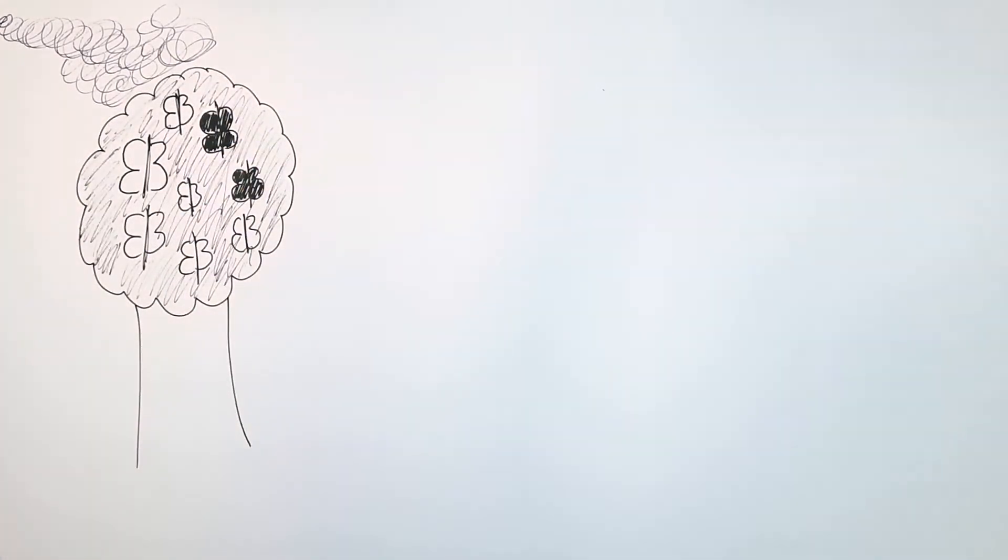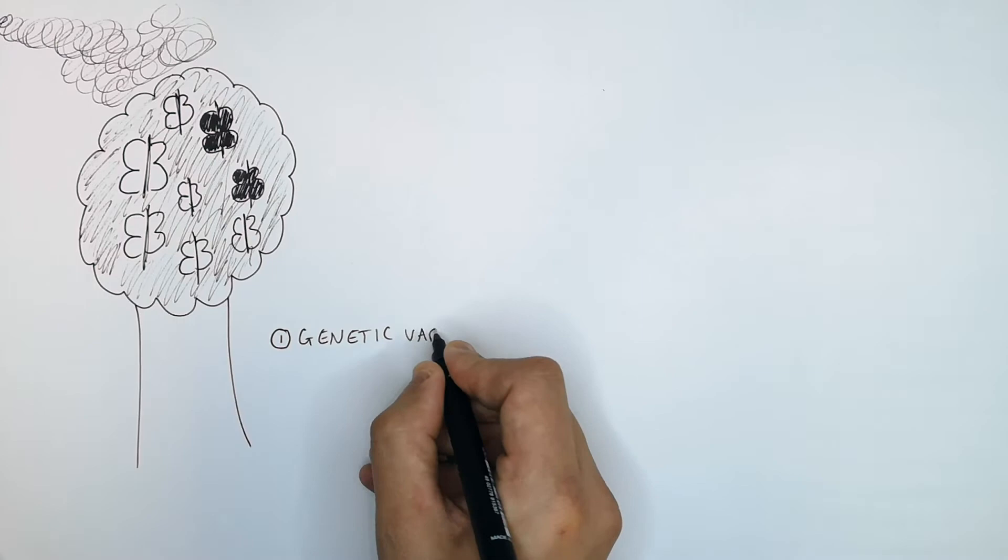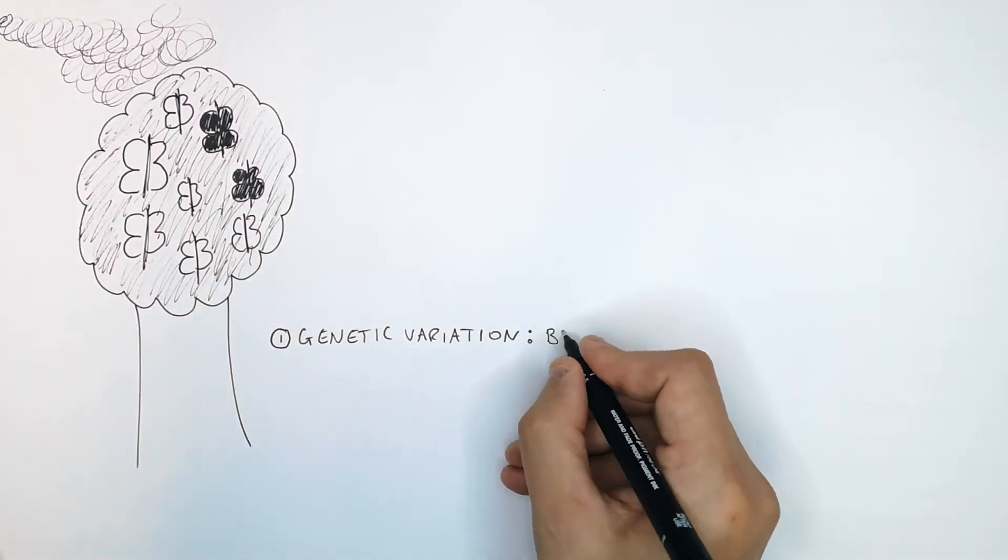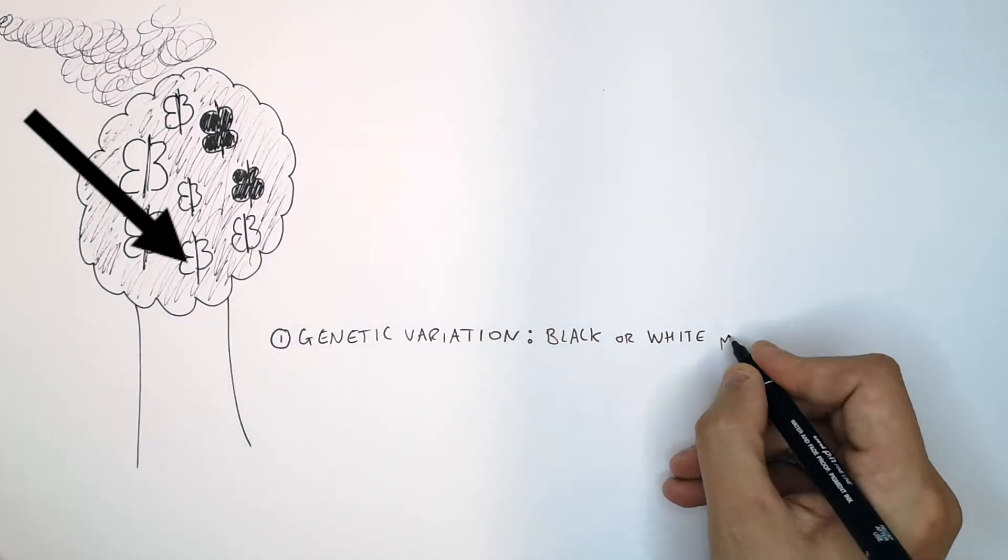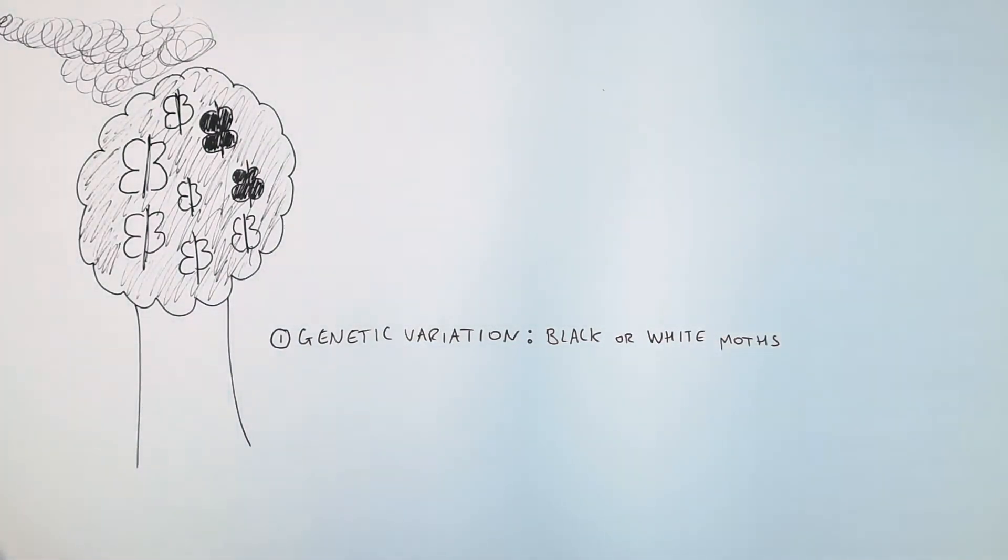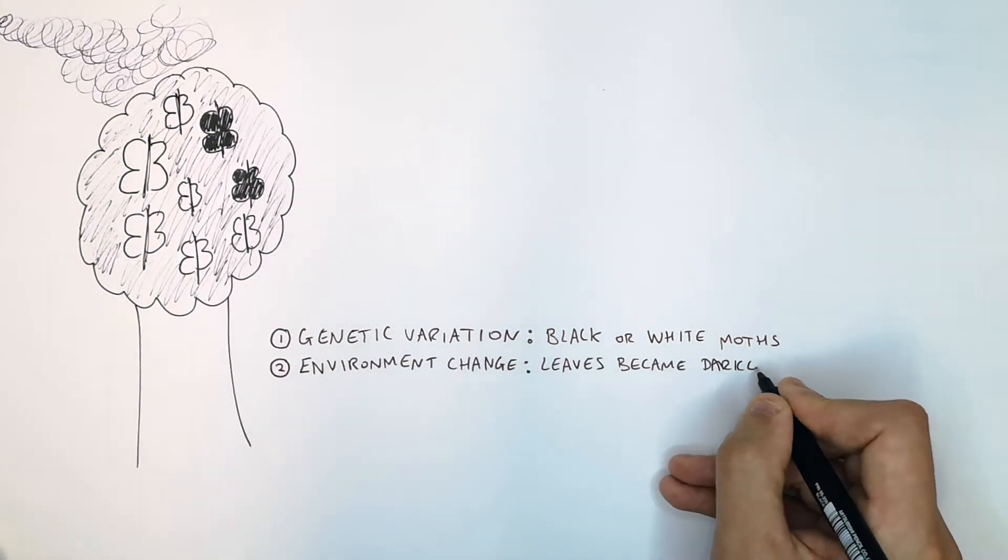When writing about natural selection, you must use the correct language. We always start off with talking about the genetic variation within the organisms. In this case, the peppered moths are either going to be black or white moths. So that is the difference in the characteristics. Then you talk about the environment change. In this case, the leaves became darker.